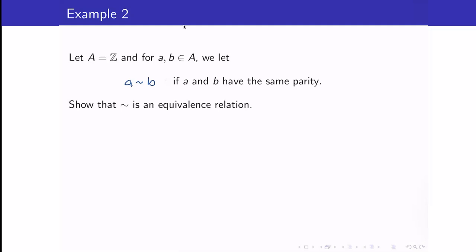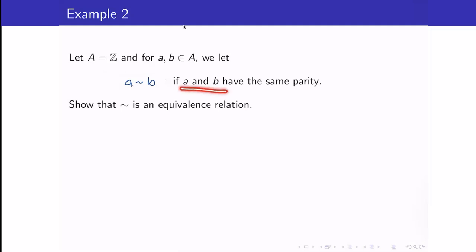Now, for Example 2, we are relating two integers because our set here is the set of integers. We say that A is related to B if A and B have the same parity. For the meantime, I will read this as 'related' because we haven't shown that this is really an equivalence relation. Let us check whether this is an equivalence relation.